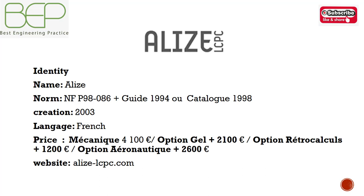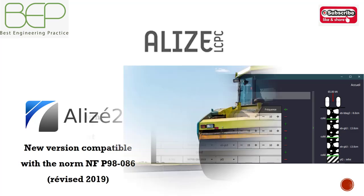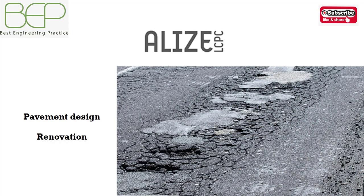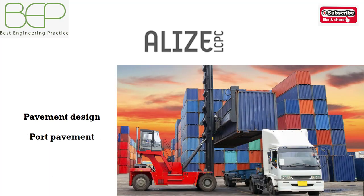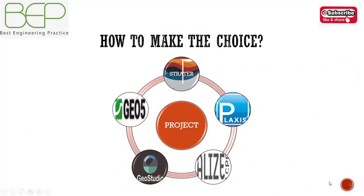ALIZE LCP is a software for designing pavement structures. This pavement can be for roads, ports, logistics areas, or aeronautical applications. The new version of ALIZE is compatible with the norm NF P 98-086, which was revised in 2019. ALIZE pavement design is used for new pavement, renovation of pavement, airport pavement, and port pavement. It is specialized in pavement design, which is very important because roads are consulted everywhere.